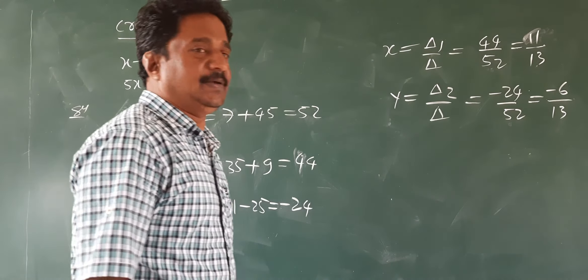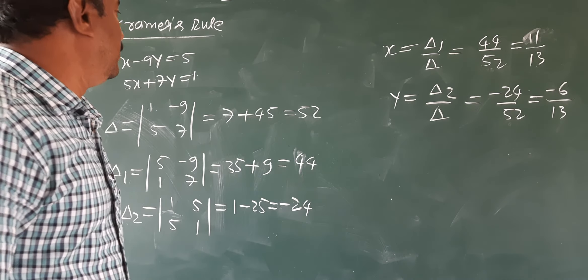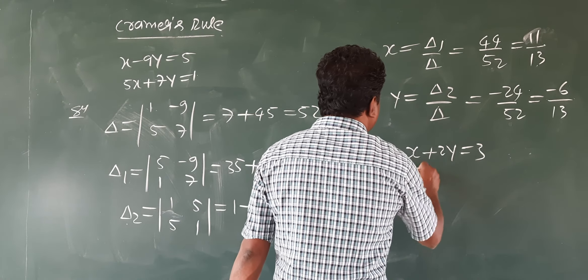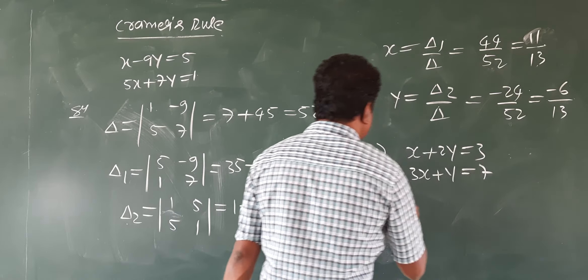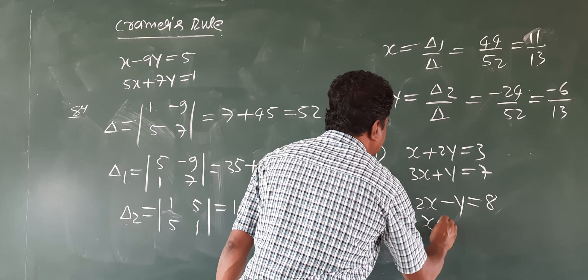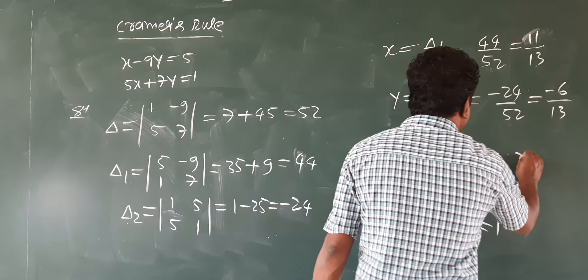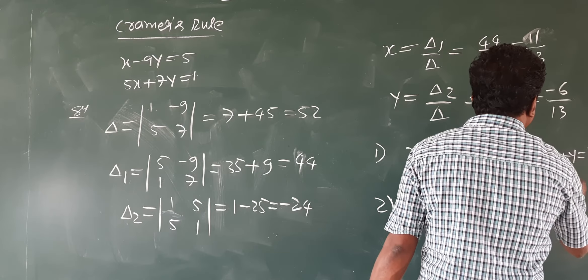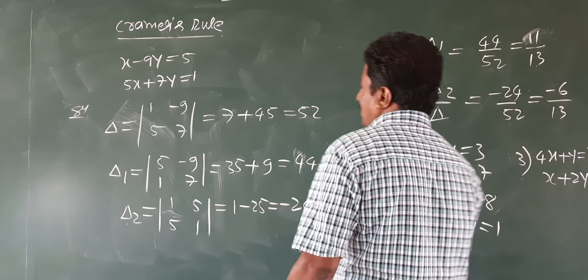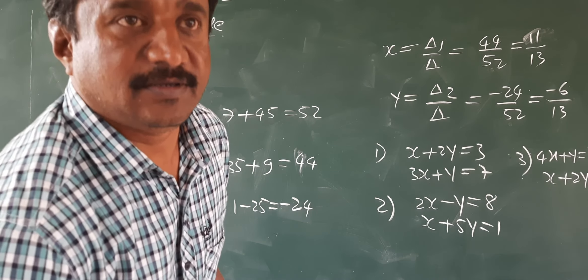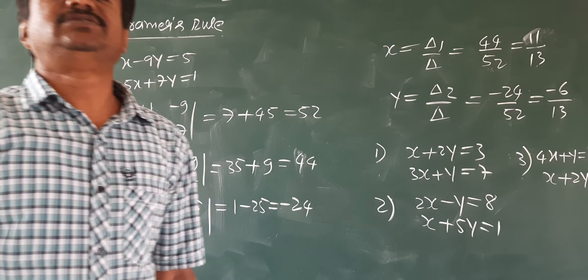I write some problems for you to solve. First: x plus y equals 3, and 3x plus y equals 7. Second: 2x minus y equals 8, and x plus 5y equals 1. Third: 4x plus y equals 7, and x plus y equals 8. I hope you understood these things, students. Let us stop this class — we shall continue in the next class.